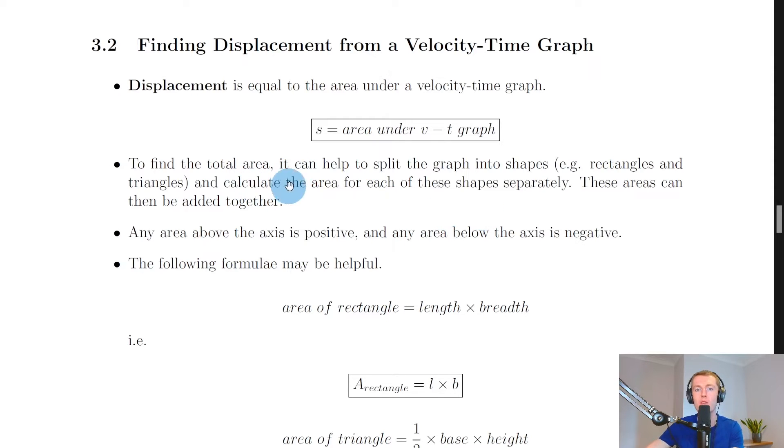To find the total area it can help to split the graph into shapes for example rectangles and triangles and calculate the area for each of these shapes separately. These areas can then be added together and the value for that area will be the same as the distance or displacement in meters.